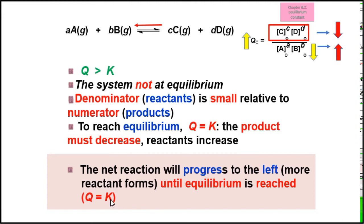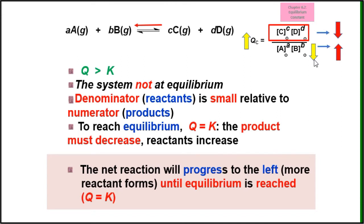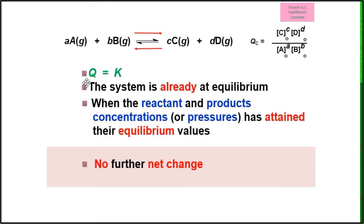You always have to check the concentration of the reactant (denominator) and the concentration of the product (numerator). If Qc is larger, meaning Kc is smaller, the system is not at equilibrium — you have to increase the concentration of the reactant and decrease the concentration of the product. If Q equals K, the system is already at equilibrium: the reactant and product concentrations or pressures have attained their equilibrium values, so there is no further net change.